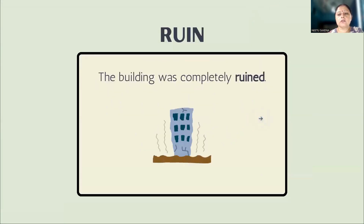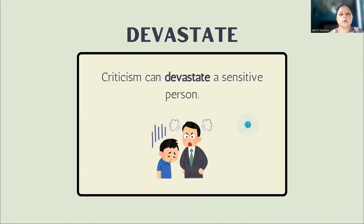Let's learn some new words for destroy. First: 'ruin' — the building was completely ruined. Ruin ka matlab bhi hota hai khatm kar deena, destroy kar deena. Next: 'devastate' — devastate ka matlab bhi hota hai khatm kar deena. For example: criticism can devastate a sensitive person.